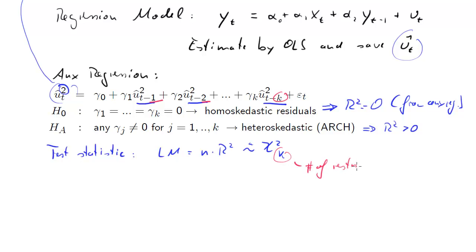k is the number of restrictions — in our case, however many lags, say 12 if you use monthly data and decide to include 12 lags. This is a very important type of test because in time series data, series will often have this type of heteroscedasticity.